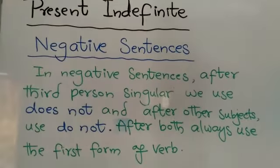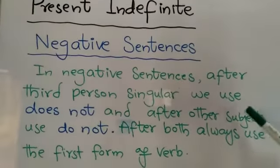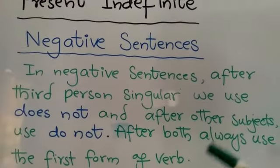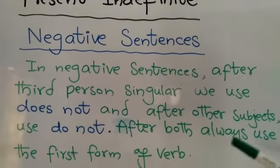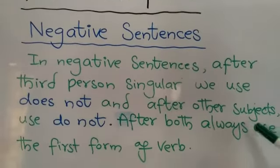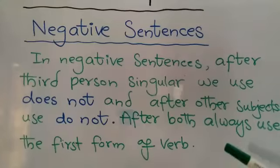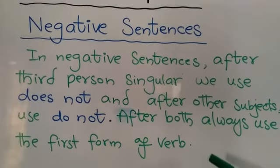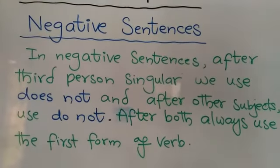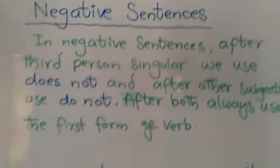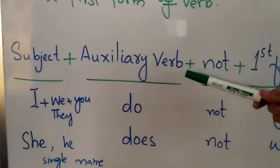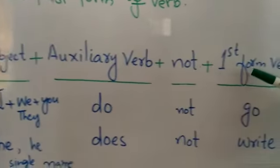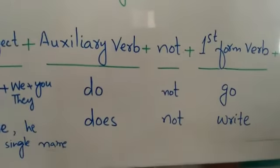First of all, in negative sentences, after third person singular we use 'does not', and after other subjects we use 'do not'. After both, we always use the first form of verb. The formula is: subject plus auxiliary verb plus not plus first form of verb plus object.